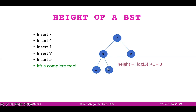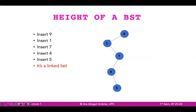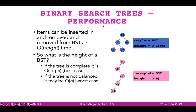Compare that to the arrangement with 7, 4, 9, and 5 where the height of the tree is just two — it is so much faster to look for 5. When the binary search tree looks like a linked list, it actually is just a linked list, and we have to traverse from nine, one, seven, four, and then five. The height is so much bigger, so it's O(n) — the number of nodes.